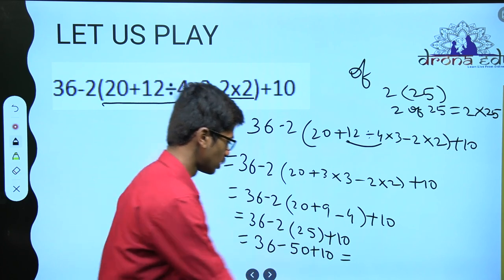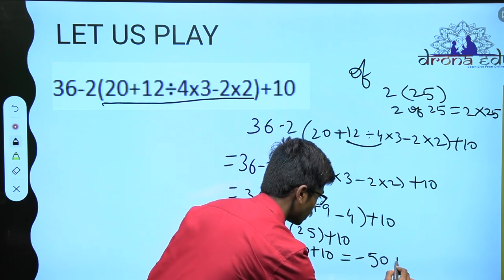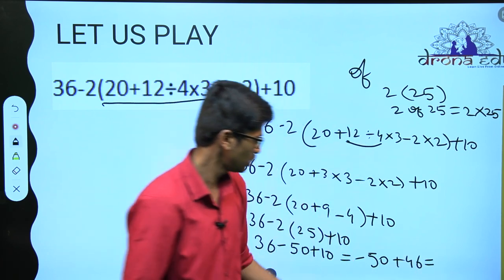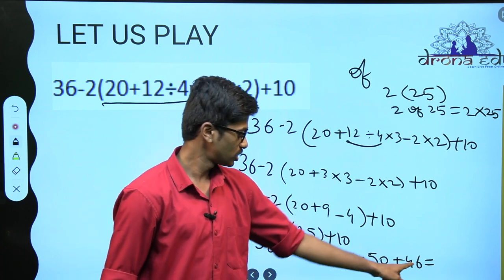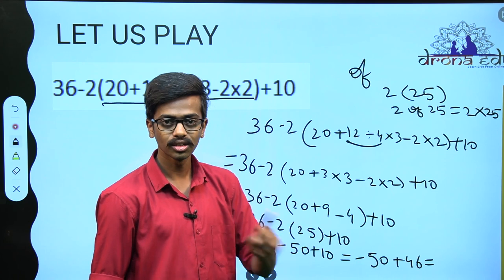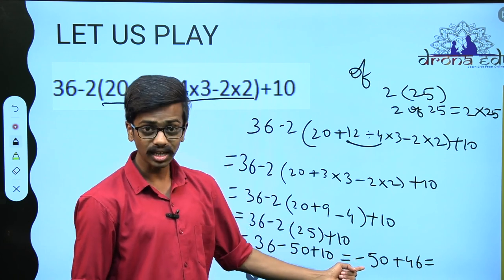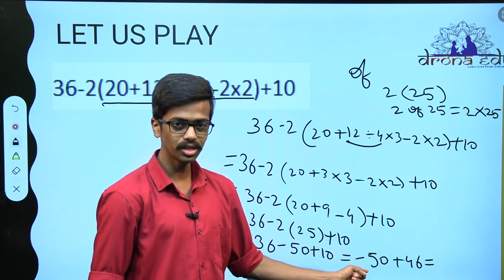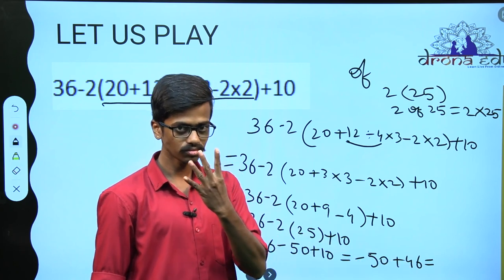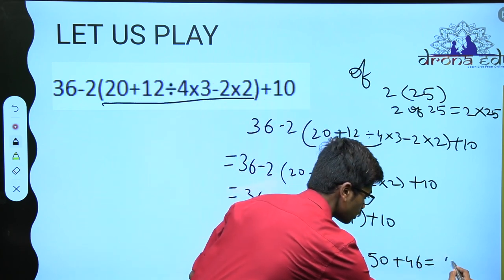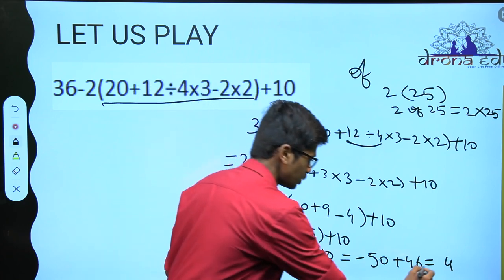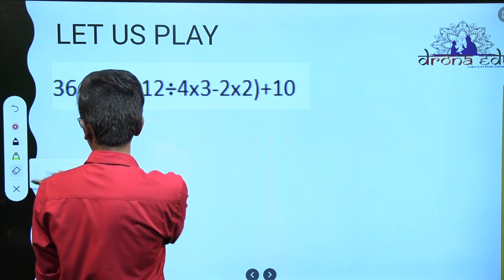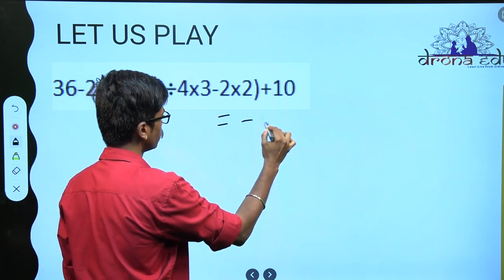So what do you have here? We have 36 plus 10, so minus 50 plus 36 plus 10 is 46. Do not forget that you have a minus sign here — use the rules of integers. When you have different signs, subtract and put the sign of the bigger number. So what is 50 minus 46? It is 4. What is the bigger number? 50. So it is minus 4. The answer for this sum is minus 4.